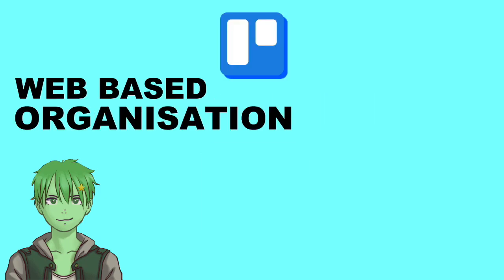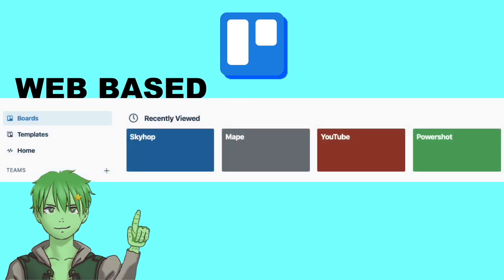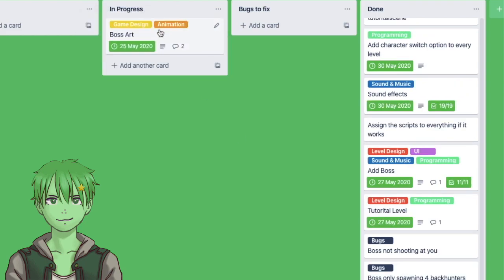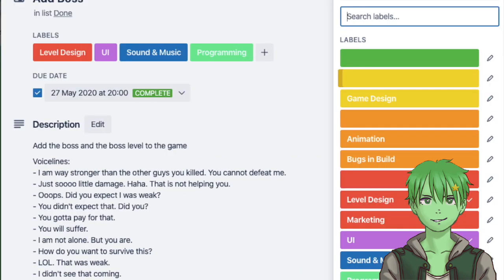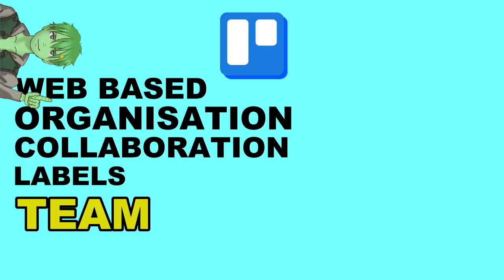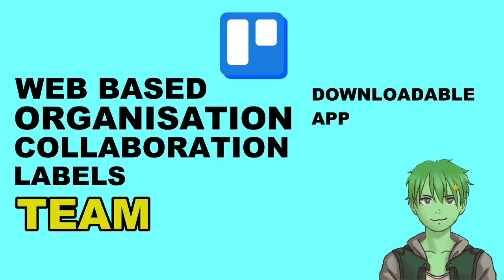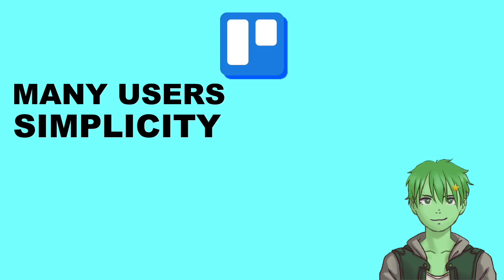Number 7: Trello. Trello is a web-based tool for organizing your projects and collaborating with others. Inside of Trello, you can create task boards with different columns. You can write your tasks onto cards and easily move them between the different columns. To your cards, you can add due dates, checklists and categories. For example, you can add a category for programming, level designing, 3D modeling or art. This is extremely helpful if you're working in a team. You can add different team members to your Trello board to work on one project together. It is web-based, but there is also a downloadable app for Windows, Mac and Android. A lot of game developers use it, mainly because of its simplicity and easy-to-understand user interface.